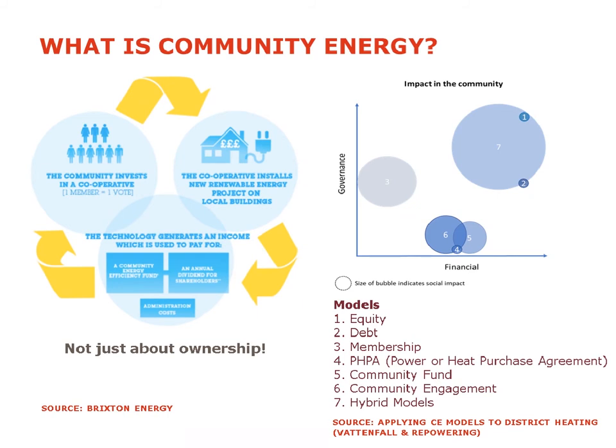Models one to six could create hybrid models. You can see model number seven is the impact created by combining some of these models together. The most successful community energy projects are a combination — they are hybrid models and they're not just about equity. The big takeaway is we shouldn't look at community energy as just a financial benefit vehicle.